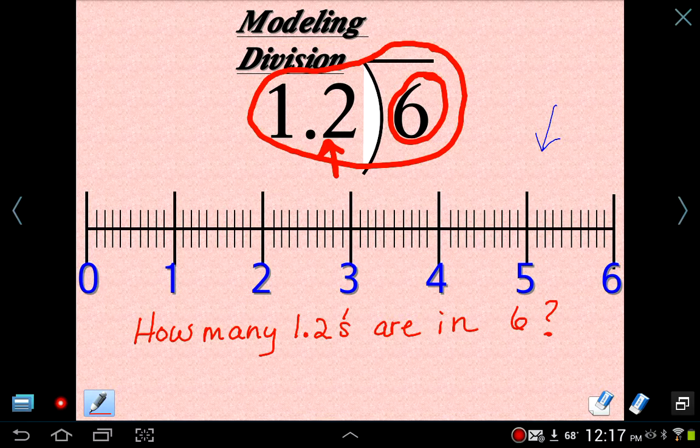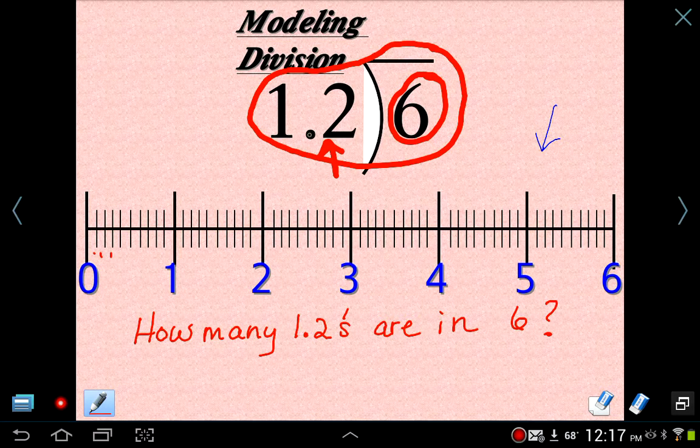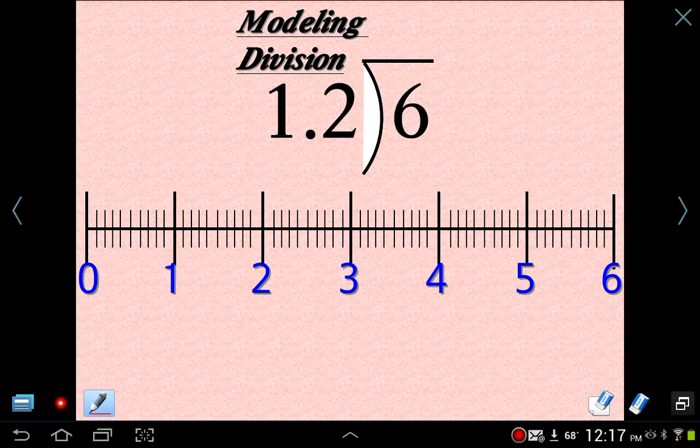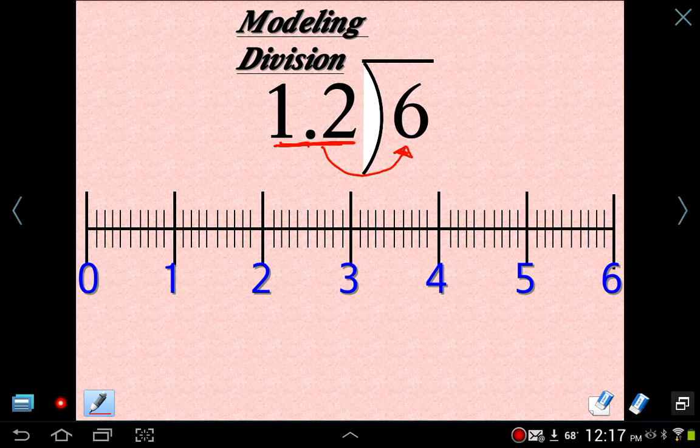And really, all we're talking about right here is estimating. If it works out perfectly, great. But really, that's all I want to know. I want to know how many times 1.2 goes into 6. So using this number line model, it would be kind of easy. I know not everyone's going to be able to draw a number line with tenths in there, but these are all a tenth.